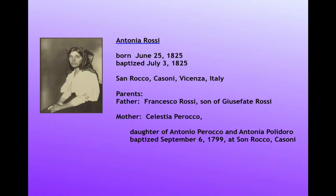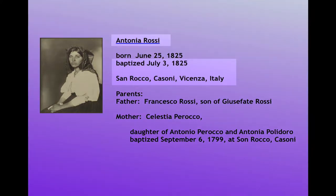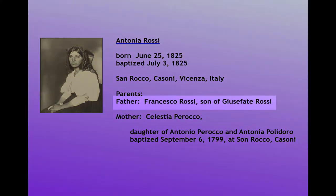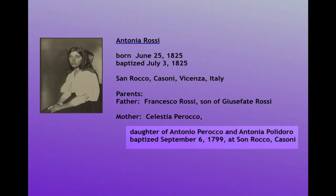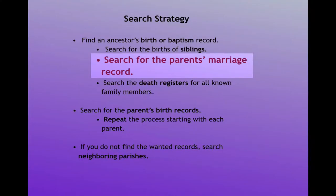In Parts 7a and 7b of this series, we began a case study on the family of Antonia Rossi. We found her baptism record, and in that baptism record, we learned that her father was Francesco Rossi, the son of Giusefati Rossi, and that her mother was Celestia Porroco, the daughter of Antonio Porroco. We also found Celestia's baptism record and learned that her mother was named Antonia Polidoro. Our next step is to find the marriage record of her parents.